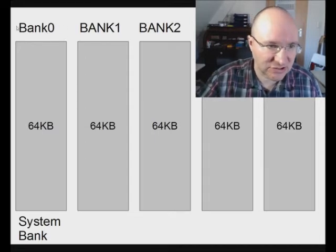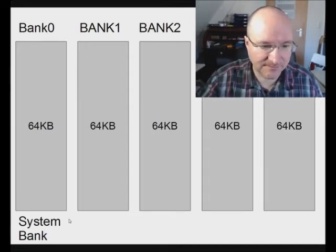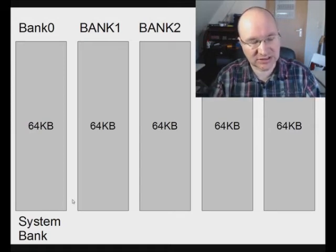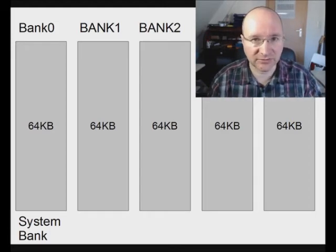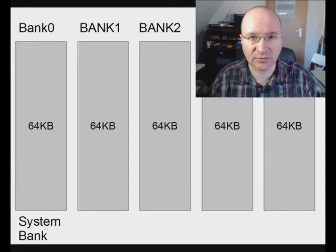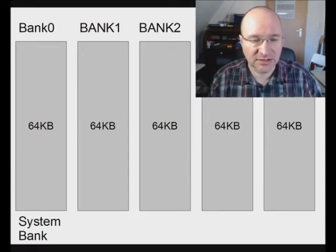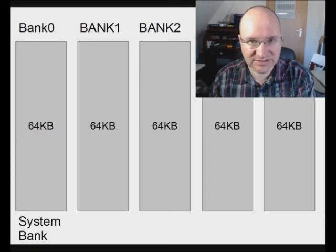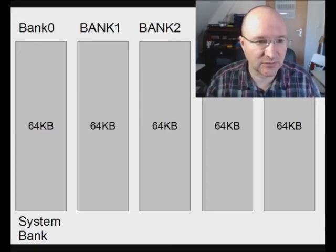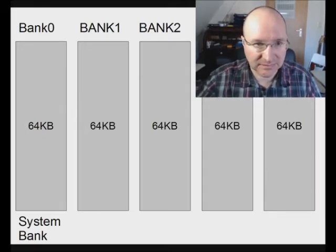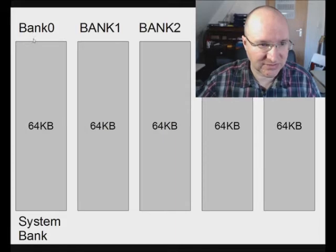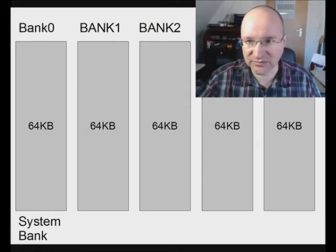There is also one special bank — bank zero — which has a special function. This is completely unimportant as long as you only program in BASIC; it becomes important later when working in assembler. The first 64-kilobyte block is called bank zero, then bank one, bank two, and so on.